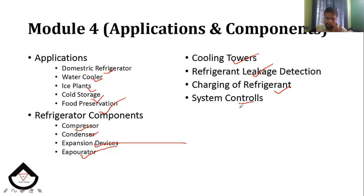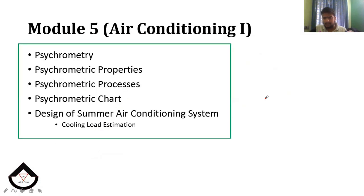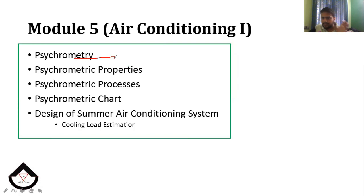Module 4 has the refrigeration portion. There are also two air conditioning sections. Module 5, which is the largest module, covers psychrometry. Psychrometric properties, equations, correlations, and problems are all included in module 5.